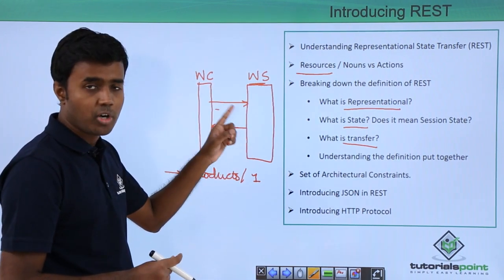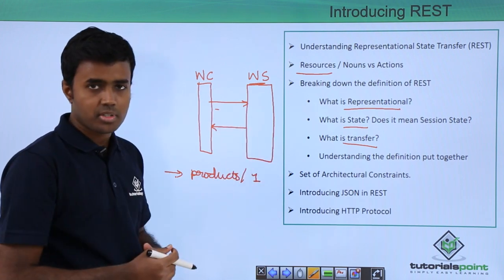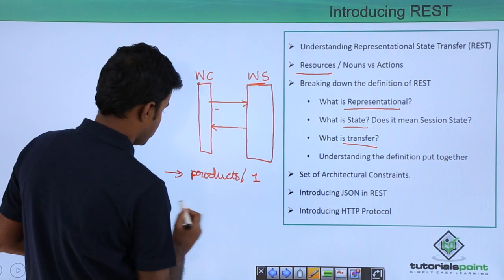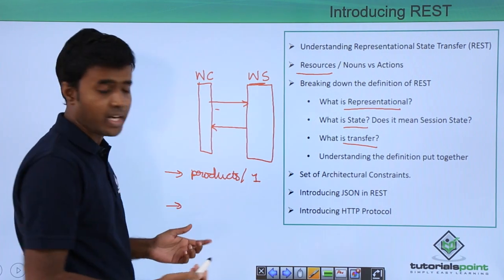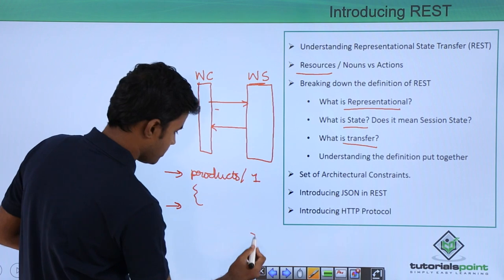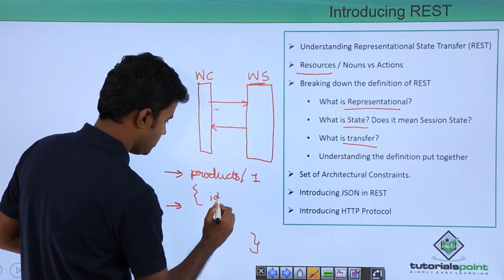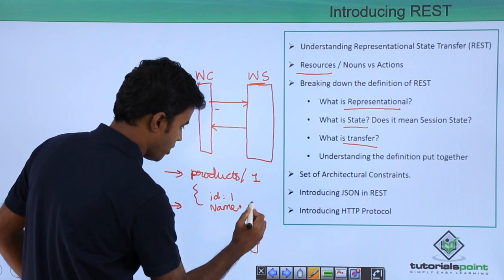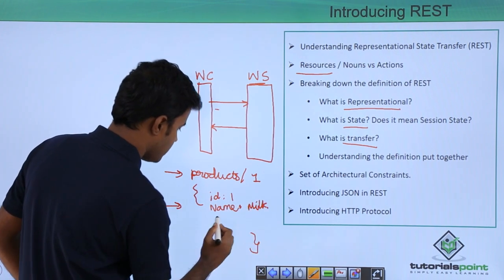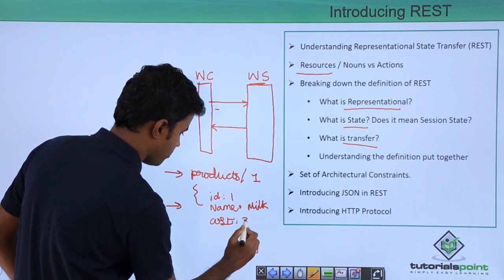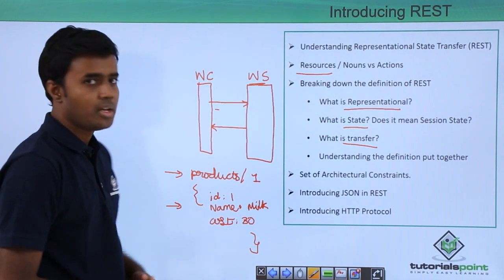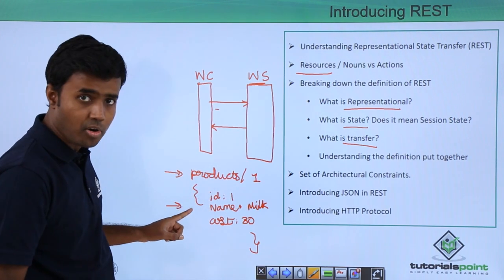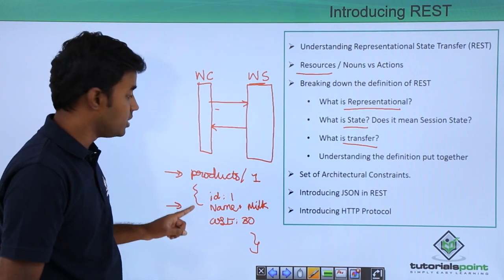And server, what it will do is it will fetch the resource from its database and return the response. The response will be something like ID 1, name, it could be the name of a product called milk, and cost, for example 30. This is the request from the client to the server and this is the response from the server to the client.